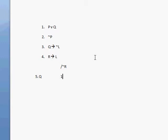We got Q using lines 1 and 2 with disjunctive syllogism — written as DS. Now that I have Q, I can use it further. Line 3 says if you have Q, then you have not L, and I do have Q. So for line 6, I'm going to get not L. I got not L using lines 3 and 5 with modus ponens — written as MP.